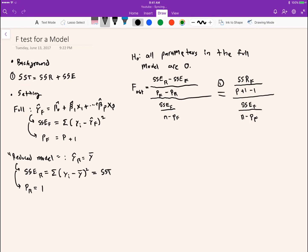And then as usual, this obtained F value comes from an F distribution with this time P numerator degrees of freedom and n minus PF denominator degrees of freedom.